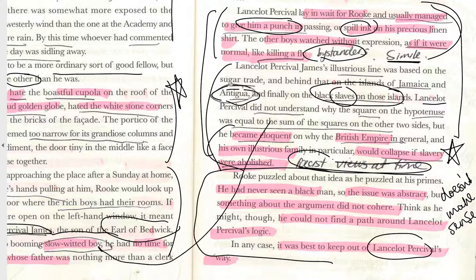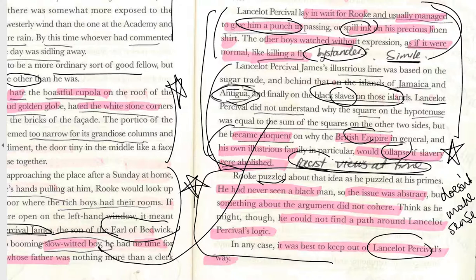Lancelot is described as slow-witted — he doesn't know that the square of the hypotenuse equals the sum of the squares of the other two sides — but he can defend slavery and claims the British Empire would collapse if slavery were abolished. He symbolises the racist views of the time and helps us challenge those views today. Rook, however, is puzzled by that argument — we're positioned as readers to view him favourably. This foreshadows Rook's compassion and his later involvement with questions of indigenous rights.